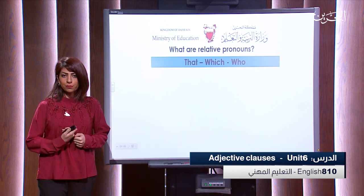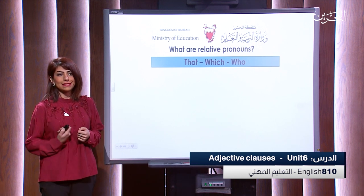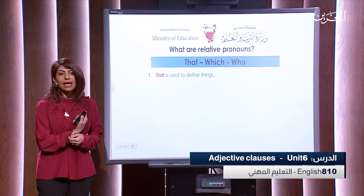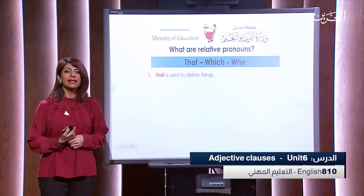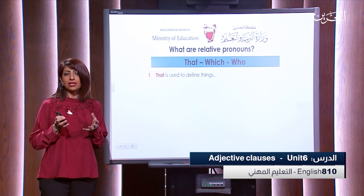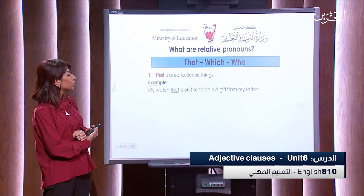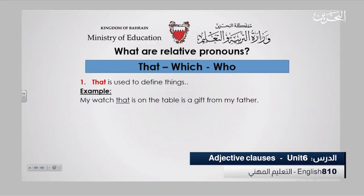Each one of these relative pronouns means something or determines something. Starting with 'that' — that is used to define things. When I want to talk about things as an object, we use 'that.' For example: 'My watch that is on the table is a gift from my father.' That here refers to my watch and gives extra description and explanation for the watch.